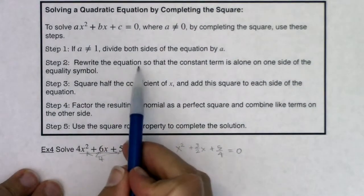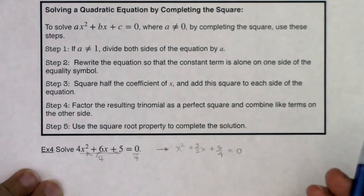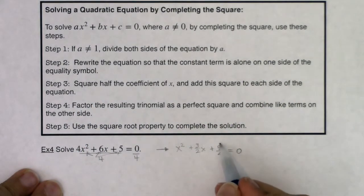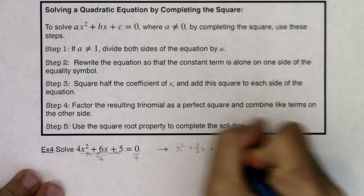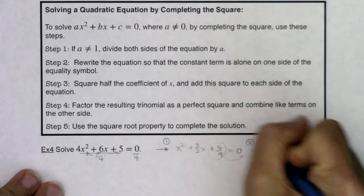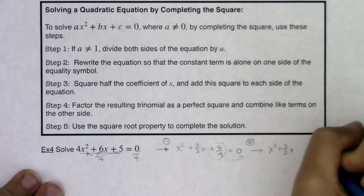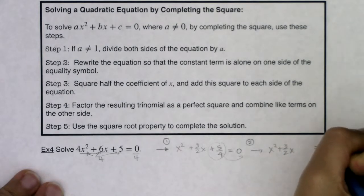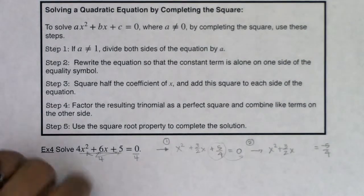Step 2 says rewrite the equation so that the constant term is alone on one side of the equality symbol. That means I need to move this term to the right side of my equation. So I'm looking at x squared plus 3 halves x — I'm going to leave some space — and I get negative 5 fourths on the right side. Now the fun begins.